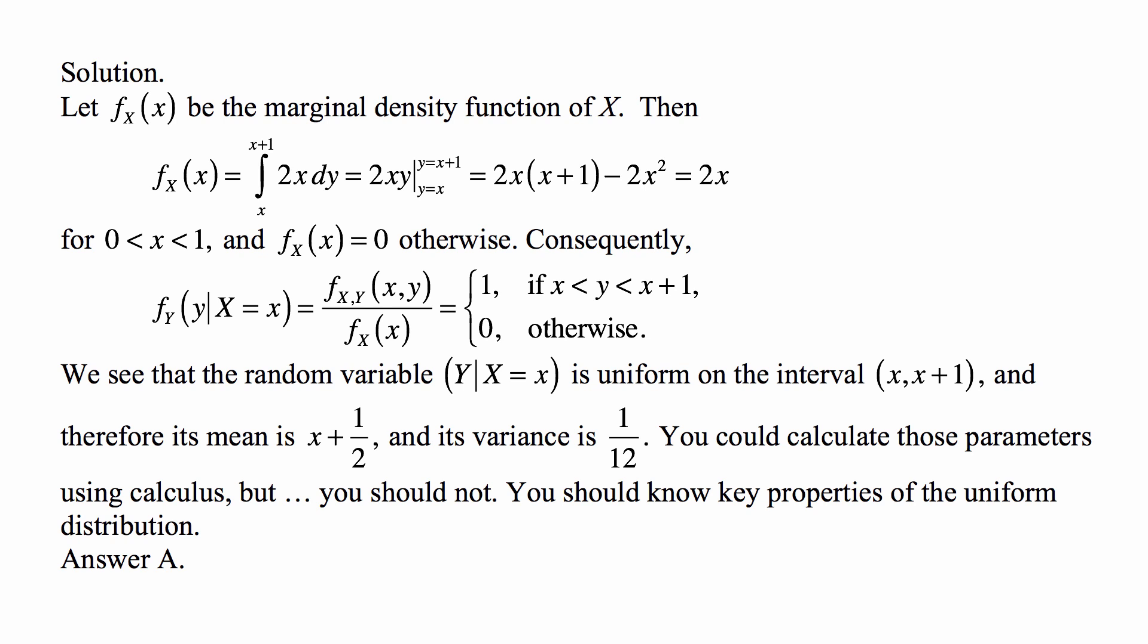and its variance - it's a uniform distribution on a unit interval, so interval of unit length. The variance in general is the length of the interval squared divided by 12. In this case, x plus 1 minus x, which equals 1 squared divided by 12, so 1/12.